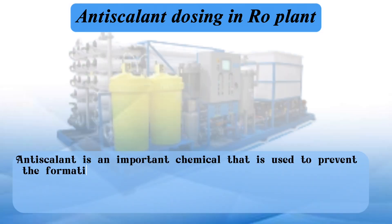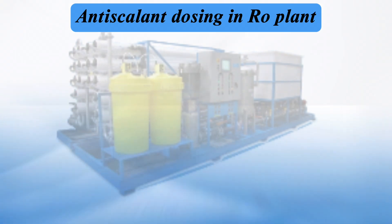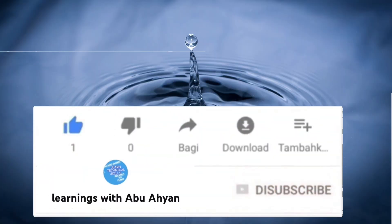Antiscalant is an important chemical that is used to prevent the formation of scale on RO membranes. Scale can clog the membranes and reduce their efficiency. To calculate the antiscalant dosing quantity, you can use the formula provided. If you have any questions about antiscalant or RO plants, please leave a comment below.